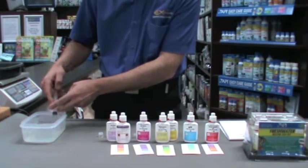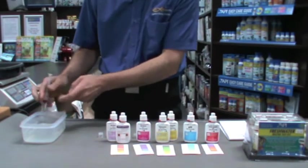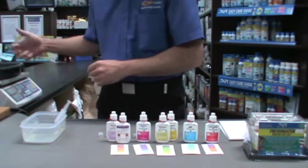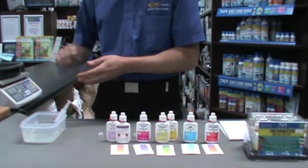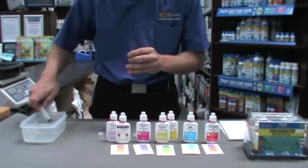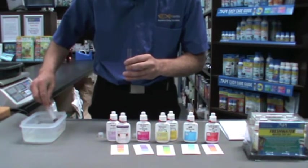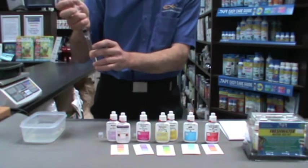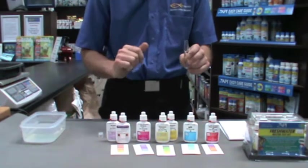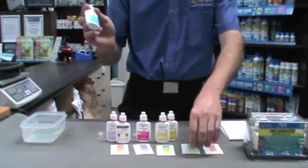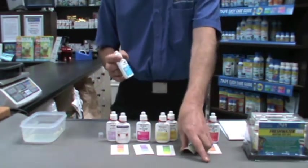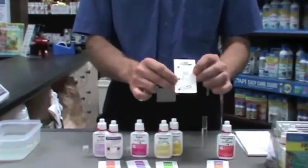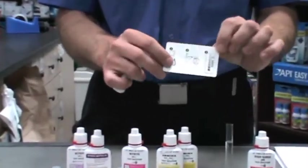First, we need to rinse the test tube in some water taken from the tank we're testing. Then we're going to add our 5 milliliters of water which is what we need to carry out the test. We use a little syringe that makes things easier. We have the pH test kit with a color chart showing what pH the water is, and instructions on the back.